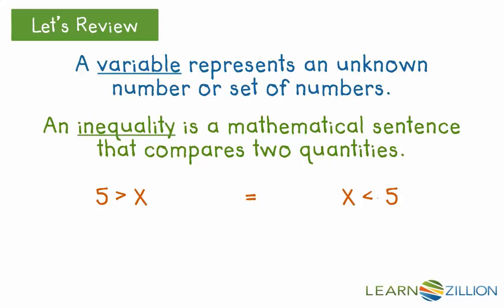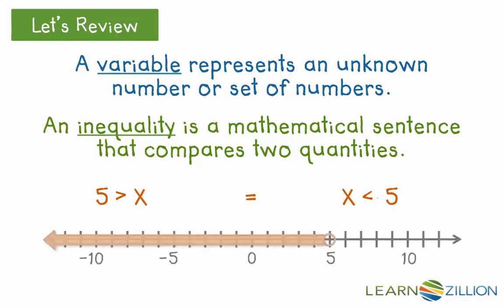Inequalities can be shown visually through a graph. This graph represents x. If x is less than 5, this means that 5 is not included in our number set, so we have an open circle on our graph, and we will shade the set of numbers that are smaller than 5.